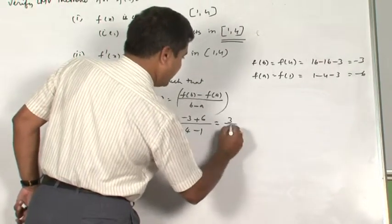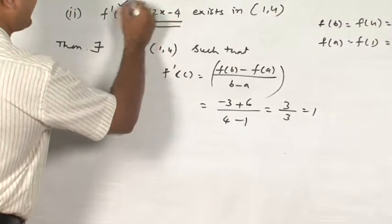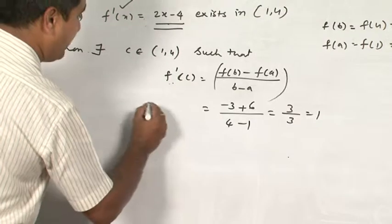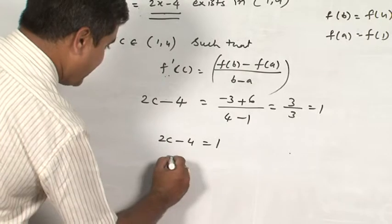3 upon 3 is equal to 1. f'(c): f'(x) is 2x minus 4. f'(c) will be 2c minus 4. So 2c minus 4 is equal to 1. Then